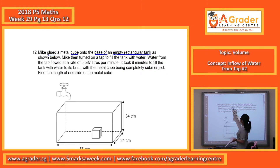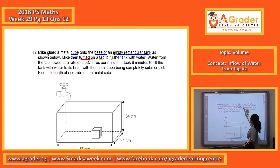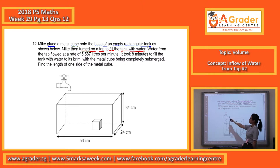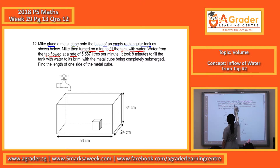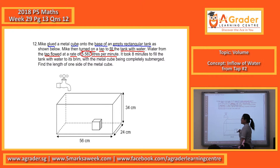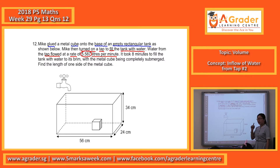Then Might turns on the tap to fill the tank with water. So we have the tap here that is going to turn on and the water will go in. This tap flows at a rate of 5.587 liters per minute. Keyword there: liters. Every one minute, that's 5.587 liters.